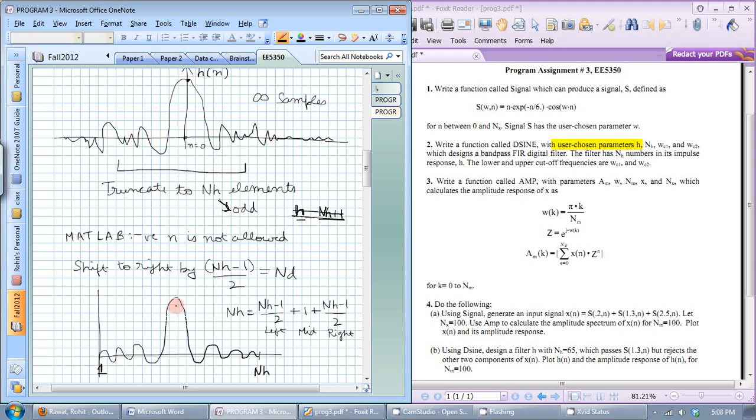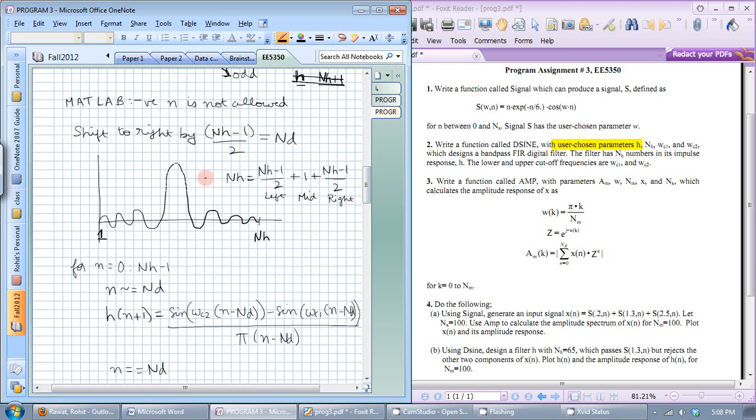So you would have one value in the middle and nH-1 over 2 values to the left here and nH-1 over 2 values on the right here. So in total, you have nH numbers and nH is an odd number. So nH-1 is easily divisible by 2. And once you shift it, this is how it should look like.